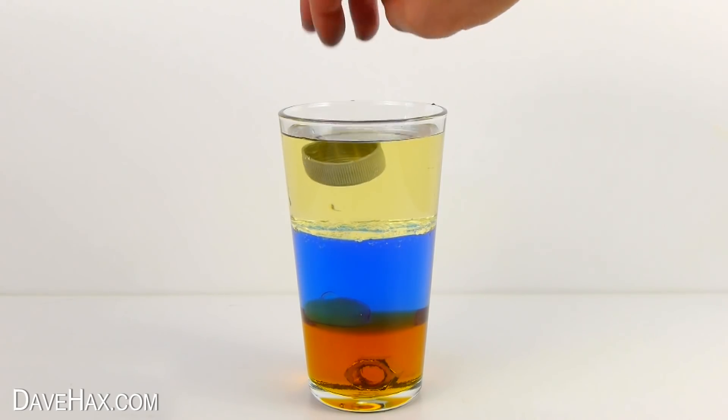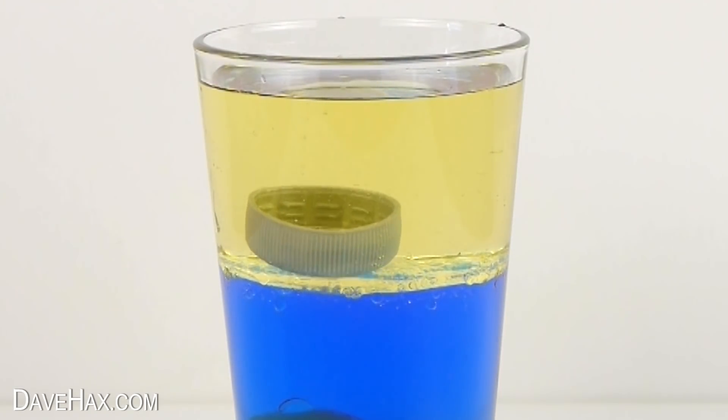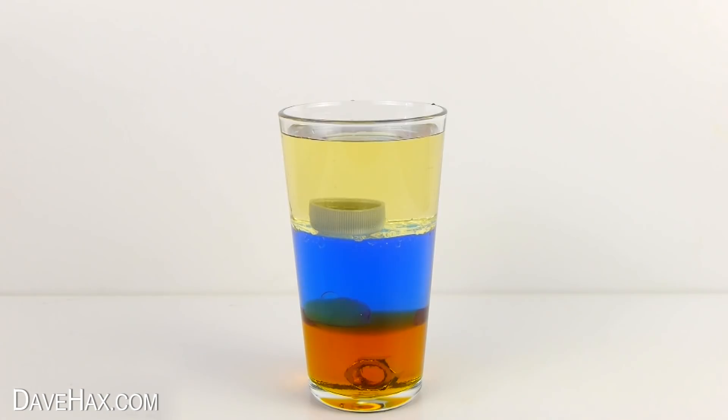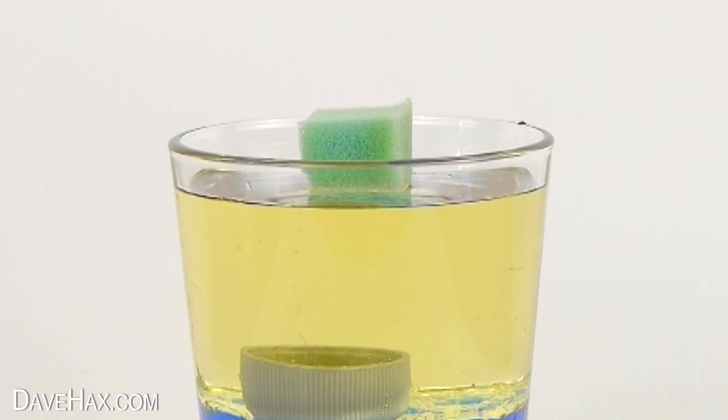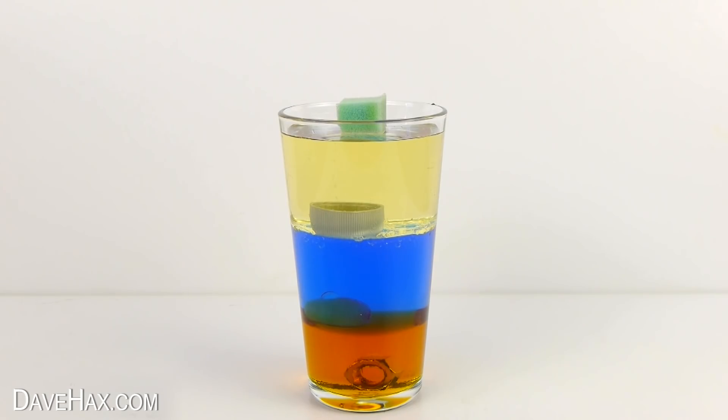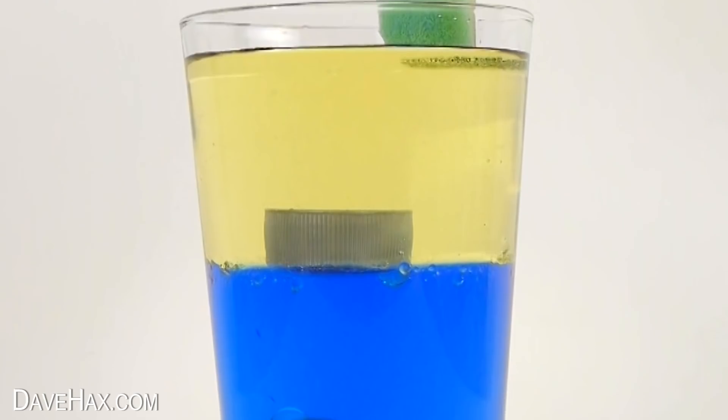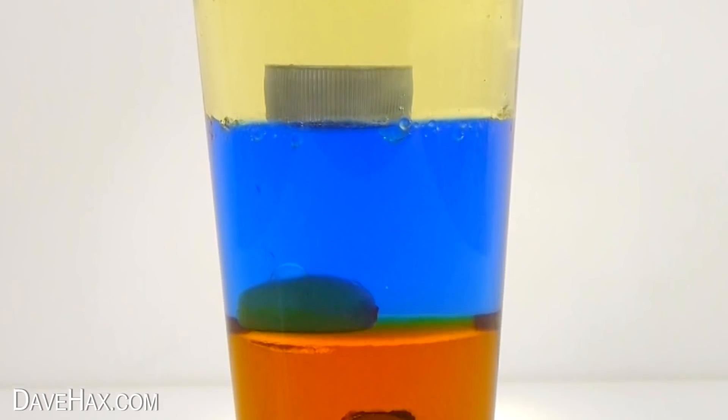Now, if I take this plastic bottle top and drop it in, it slowly sinks through the oil, and sits on the water. And finally, if I take this piece of sponge and drop it in, it sits on the top. The oil is denser than the sponge. You could try dropping different objects in to see which fluids are denser.